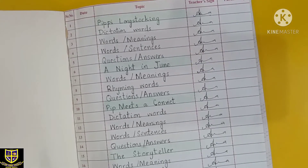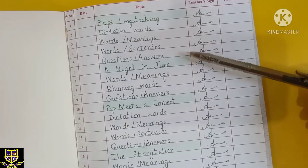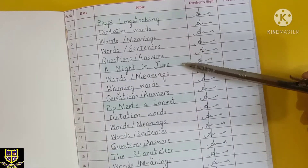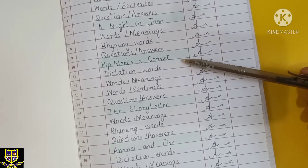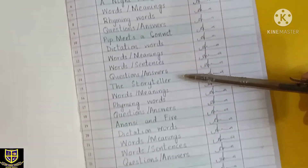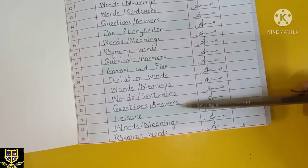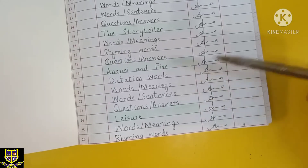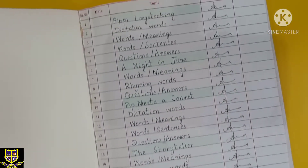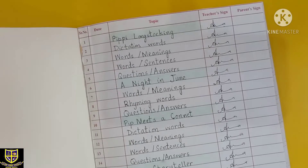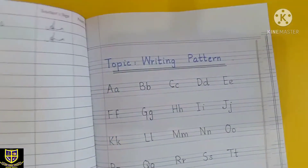First we have unit number one with all the topics, then we have a poem, then the next chapter, then a poem, then another chapter, and last we have a poem. So this is clearly showing the full first term course explanation on the index page.